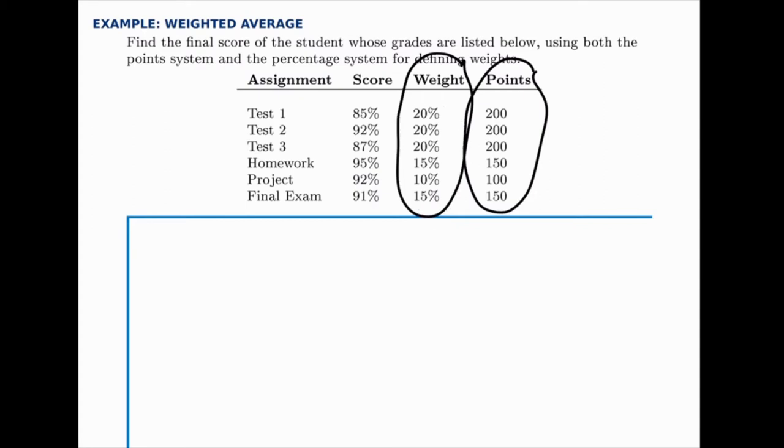So really the same information is given in the weight column or in the points column, and you may see for some of your classes the scores are given with weights, sometimes they'll be given with points. It's really the same thing, it's just written in a different way. So we're going to show the calculation with both just to compare, but we'll get the same answer either way.